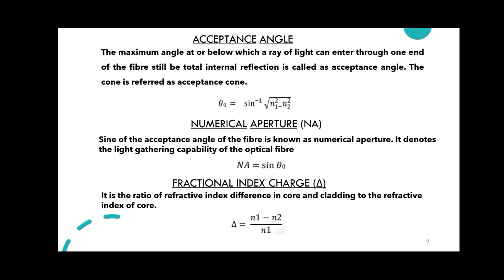This angle is called theta zero — the acceptance angle. The sine of this angle gives the numerical aperture. The numerical aperture represents the light-gathering capability of the optical fiber. The fractional index change delta is the ratio of N1 minus N2 by N1.